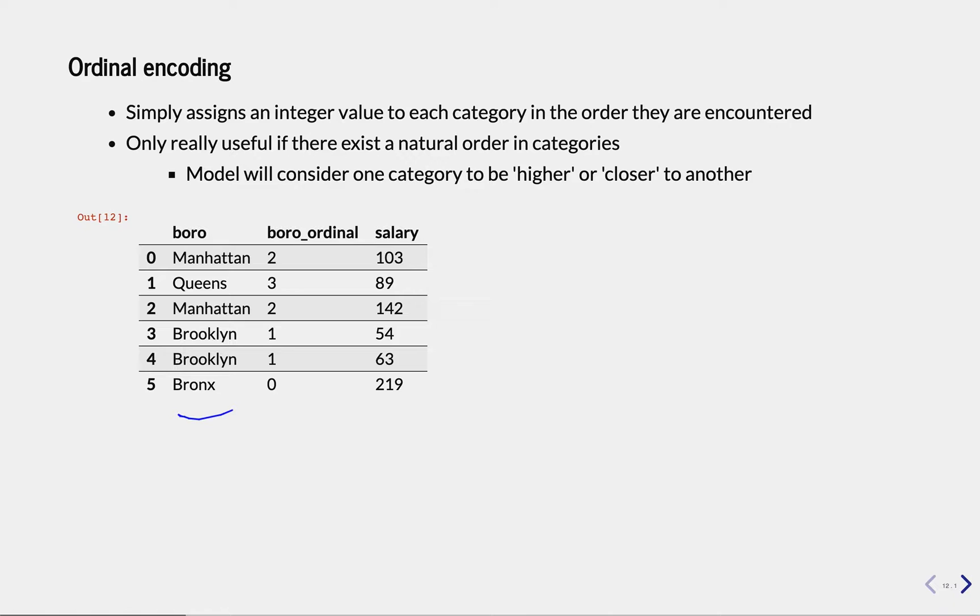Why? Because if you would do this and you give it to your classifier, like a K-NN, it would assume that, for instance, Queens is much closer to Manhattan than Queens to the Bronx. I'm not sure that's true, but it would just assume that based on the numbers that it sees, because 3 is closer to 2, then 3 is closer to 0.